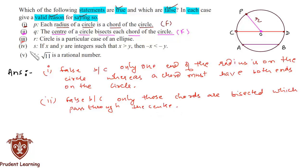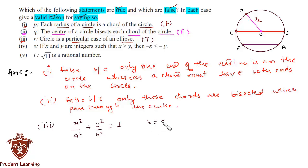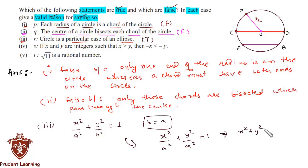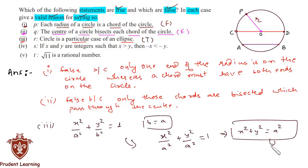The third statement: a circle is a particular case of an ellipse. This statement is true. The standard equation of an ellipse is x²/a² + y²/b² = 1. In the particular case where b equals a, this equation becomes x²/a² + y²/a² = 1, which gives us x² + y² = a². This is the equation of a circle centered at the origin with radius a. So a circle is a particular case of an ellipse when b equals a.